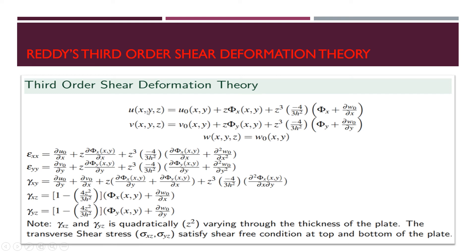So the number of unknowns are u naught, v naught, w naught, φx, and φy. It is also having five unknowns, just like the first order shear deformation theory. So the same number of unknowns are there in both deformation theories. So what would be the advantages of this third order shear deformation theory over the first order shear deformation theory?